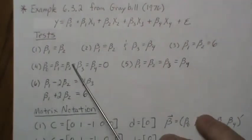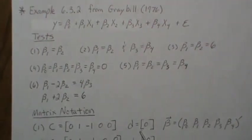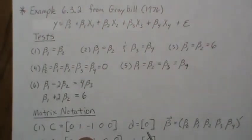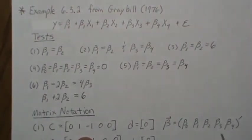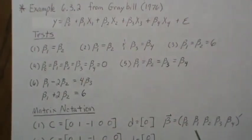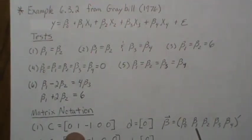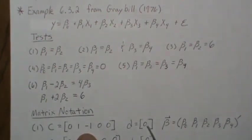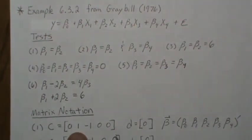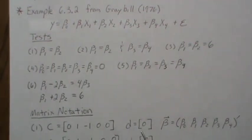For Test 1, the C matrix is a single row and the D vector is zero. Beta is always beta_1 through beta_4. If you multiply C times the beta vector you get beta_1 minus beta_2, set equal to zero — meaning: are they equal? That is the test we would conduct.